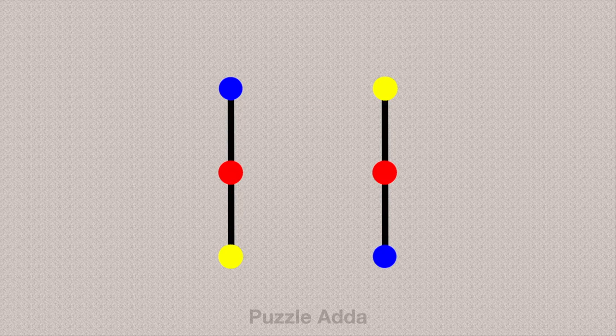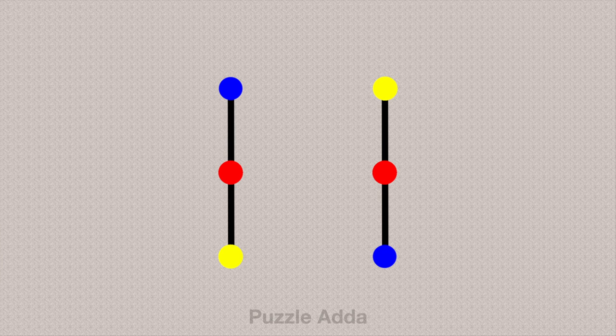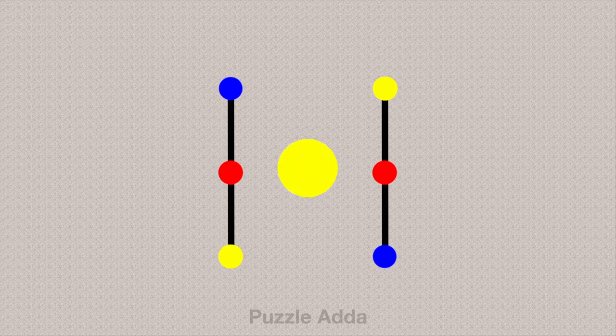On the screen, you can see two lines connected with three colorful dots each. Both the lines have a blue color dot, a red color dot, and a yellow color dot but in different order.